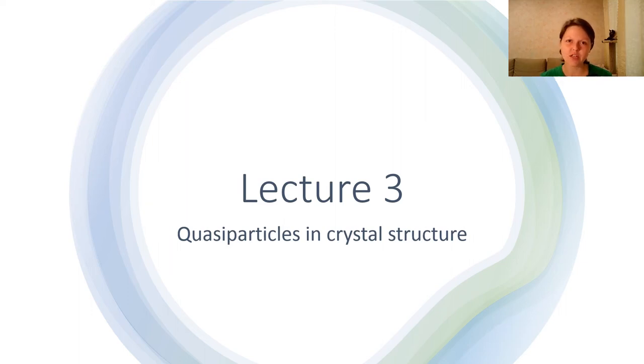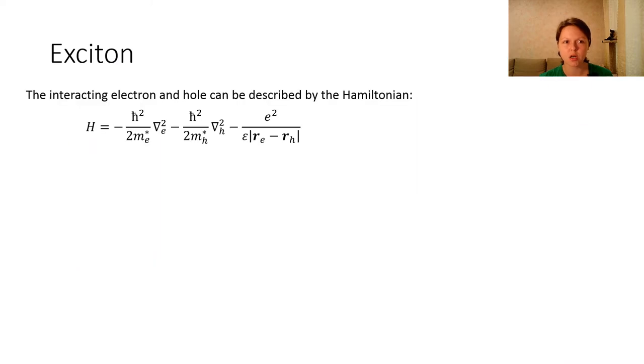In most cases, an electron-hole pair is considered as one quasiparticle which is called an exciton. We have a quasiparticle which consists of an electron and hole.